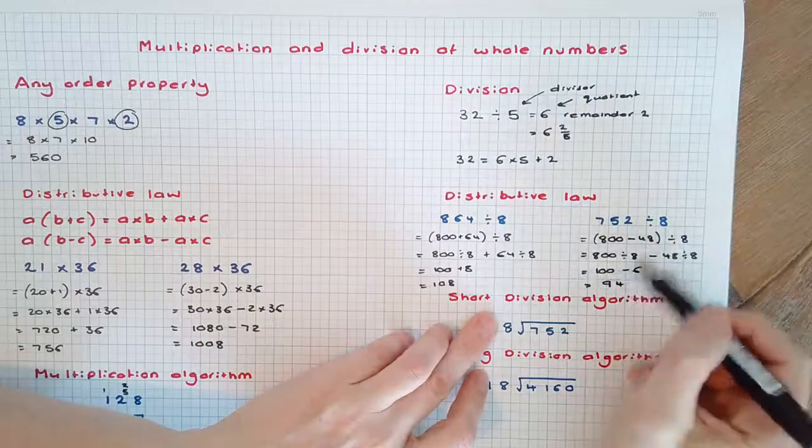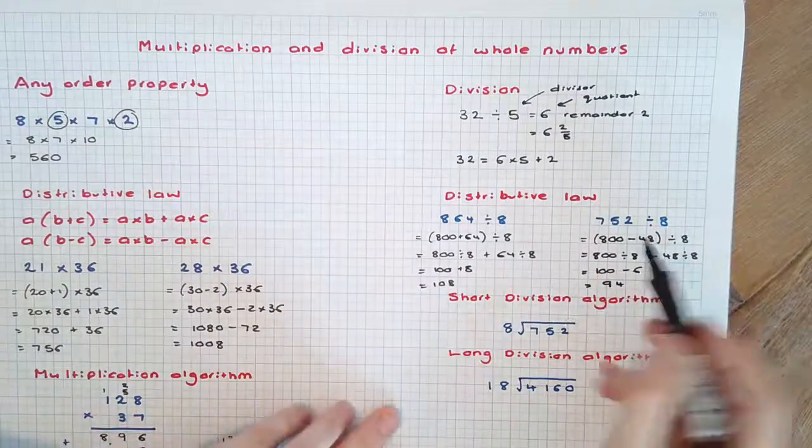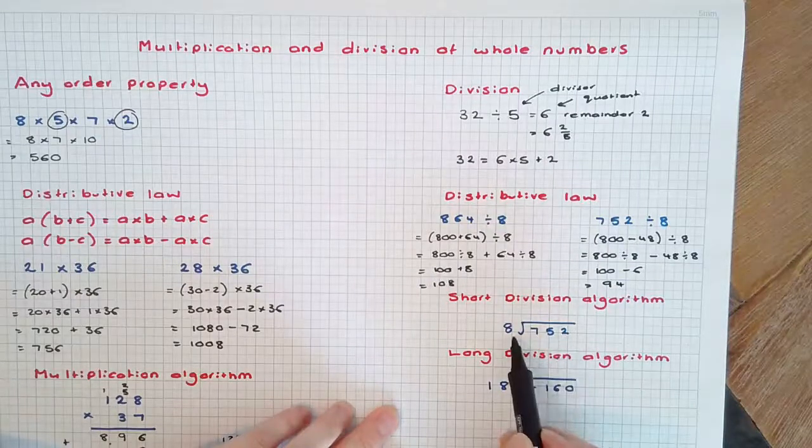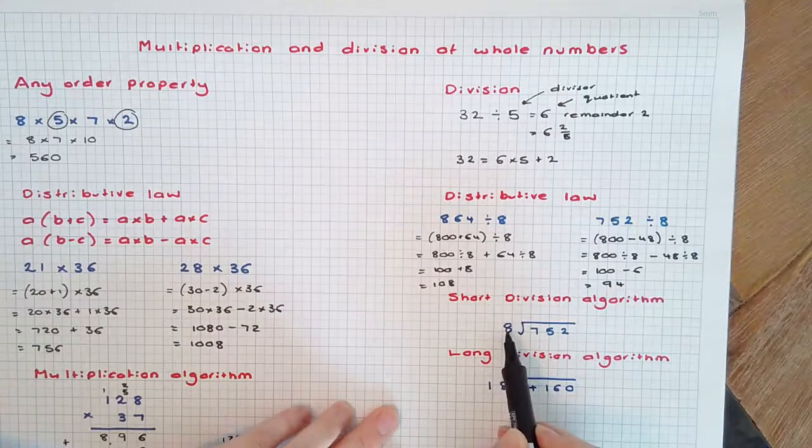Instead of using the distributive law, we could use short division. Taking this last example, 752 ÷ 8. The 8 is the divisor that goes on the outside.